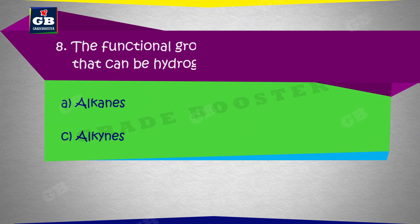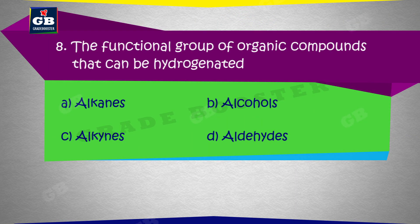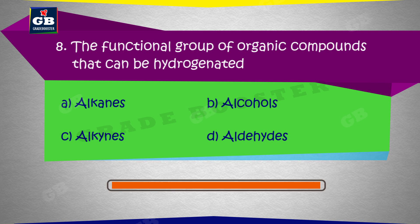The functional group of organic compounds that can be hydrogenated: a) Alkenes, b) Alcohols, c) Alkines, d) Aldehydes.